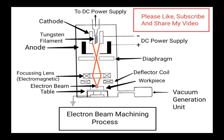By then the stream is quite aligned, and the focusing lens manages to focus it precisely on the desired spot on the workpiece. The electromagnetic deflector coil then deflects this aligned stream onto the work, through which the path of cut can be controlled. The table on which the workpiece is loaded can also be moved to feed the workpiece as needed.